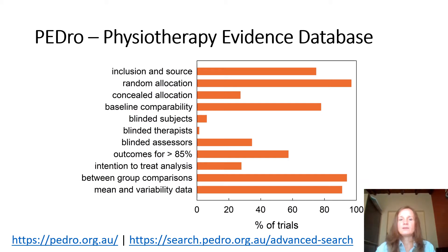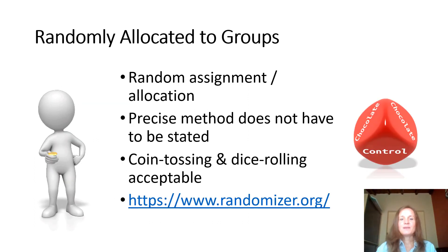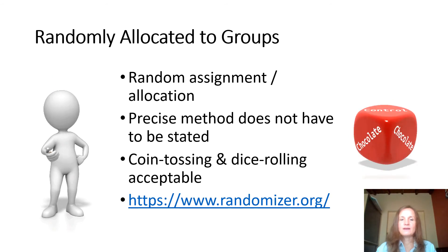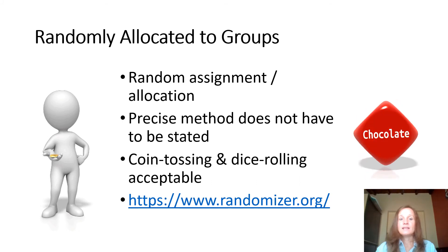We should also not blindly compare PEDro scores between different subject areas, especially because it's not possible to satisfy all scale items in some areas of physiotherapy. Trials have certain key design features which reduce bias. Bias tends to exaggerate the size of the treatment effect, and we will briefly touch on each of these.